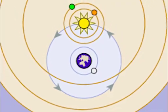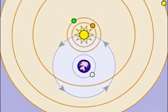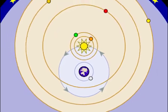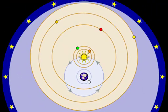Brahe supported a view of the universe that kept the earth at its center, kept the stars and sun in orbit of the earth, but placed the planets in orbit around the sun. This view was somewhat of a compromise between the Ptolemaic and Copernican models.